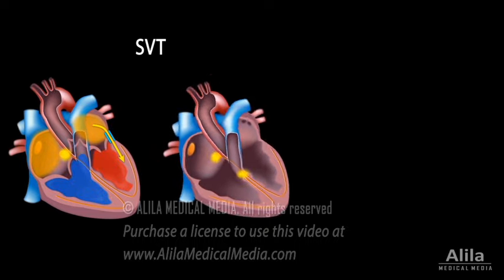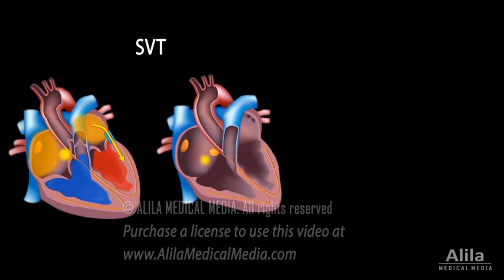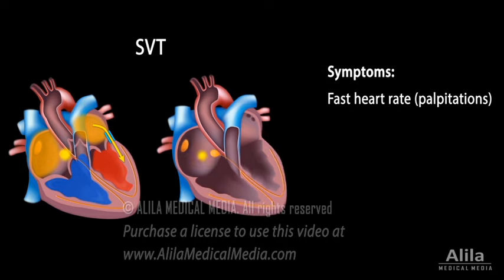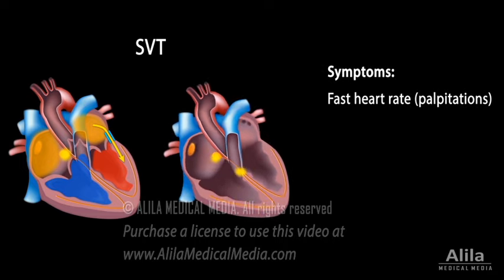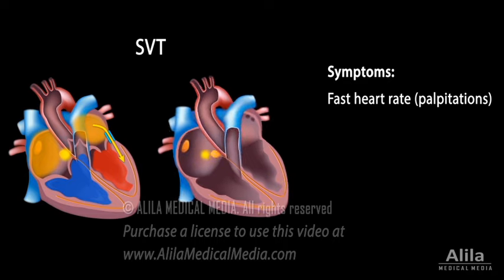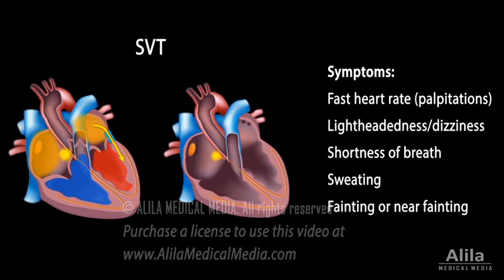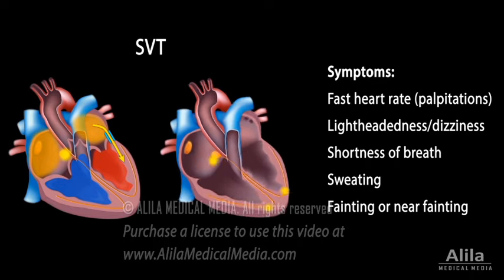SVT occurs when abnormal electrical pathways bypass or corrupt the AV nodal checkpoint. As a result, heart rate accelerates and the ventricles contract before they are properly refilled. These ineffective contractions may cause lightheadedness because the brain is not getting enough oxygen.